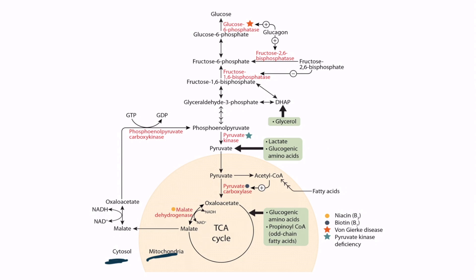As we go through the pathway, let's assume this is taking place in the liver. The first step is the conversion of pyruvate to oxaloacetate through the enzyme pyruvate carboxylase. Notice that this reaction occurs within the mitochondria.